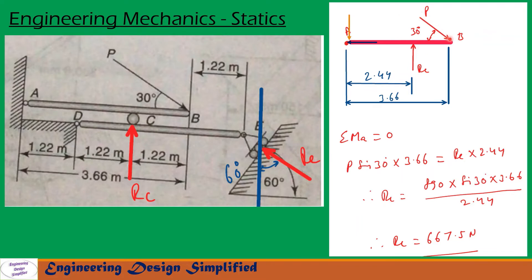So applied load is here as shown in figure and a reaction at roller is RC acting upwards. At the hinge end A, there will be two reactions, one acting downwards, another acting horizontal as shown here. So the distance from here to RC is 2.44 meters, that is 1.22 plus 1.22 meters. And the total distance A to B is 3.66 meters, that is given in the problem.